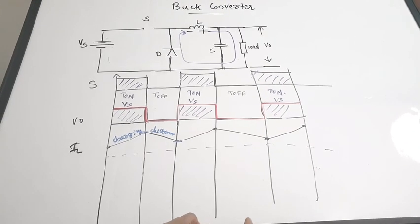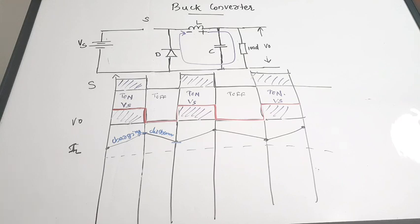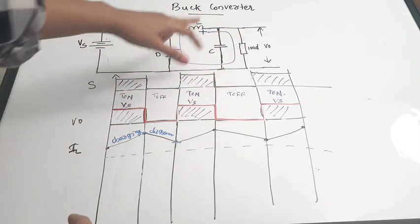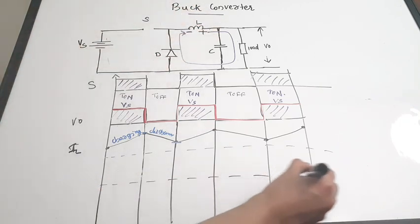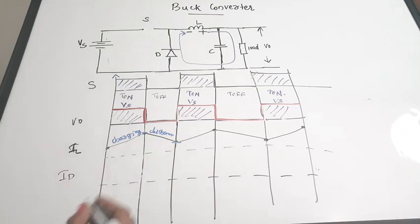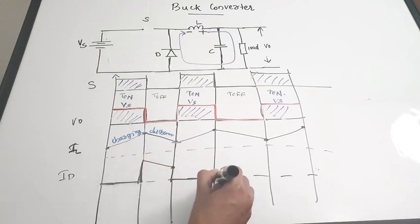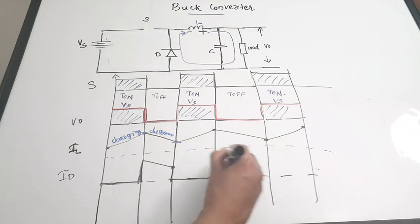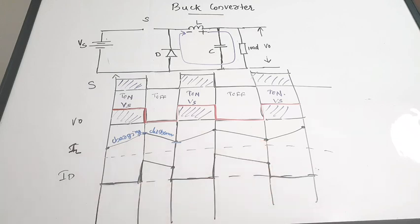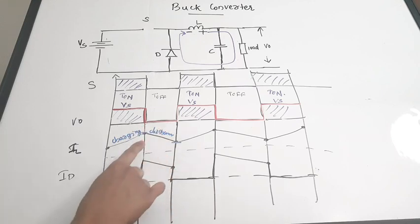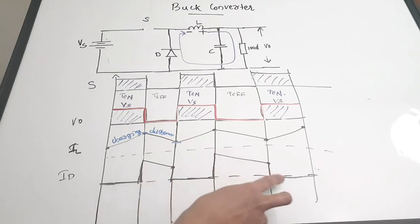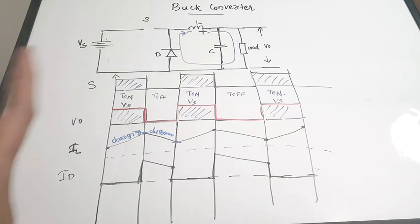For the diode current I_D: when the switch is on, the diode is not conducting so diode current is zero. When the switch is off, the diode conducts and the diode current is the same as the inductor current. So during T_on the current is zero, and during T_off the current mirrors the inductor current waveform. This pattern repeats with each cycle.